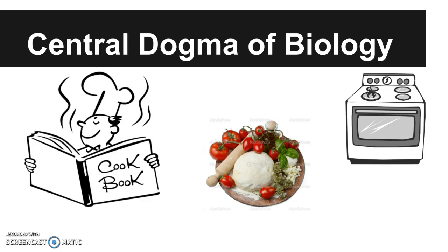Those ingredients are just like the tRNAs and the amino acids — everything you need to make a protein. The actual act of making the pizza is like the ribosome that's reading the mRNA strand and saying we need this to go here and this to go here. Then we're going to put it all together and actually have a protein. The oven is what bonds together all those amino acids.